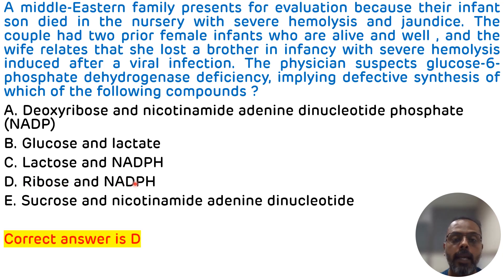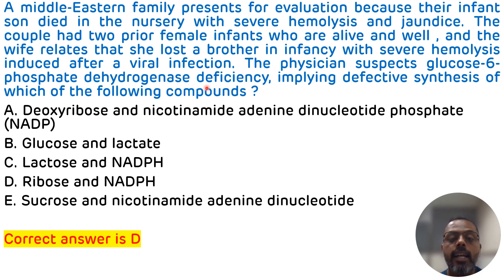NADPH is required for the maintenance of RBC membrane integrity, and it also protects the cell from oxidative stress and reactive oxygen species. So in this condition, where NADPH is deficient, the RBC cell membranes are more vulnerable to damage caused by oxidative stress and peroxides. This leads to more hemolysis and ultimately jaundice.